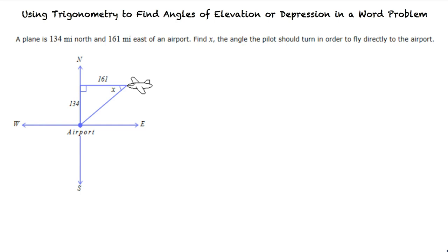In this problem, we want to find the angle of depression given the length of the adjacent side and the length of the opposite side. Which trig equation do you think we should use to solve this problem? I think we should use the tangent equation.